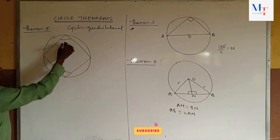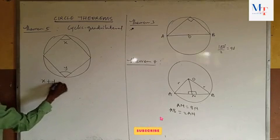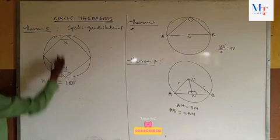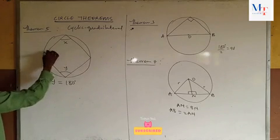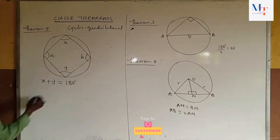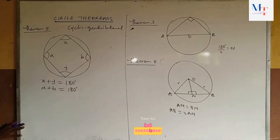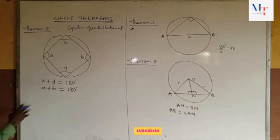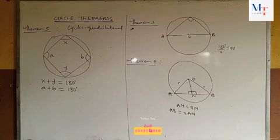If we label one pair of opposite angles x and y, then x plus y equals 180 degrees. Similarly, if the other pair of opposite angles is a and b, then a plus b also adds up to 180 degrees. This is theorem 5, which is also an important theorem derived from theorem 1. That is why we must be able to prove theorem 1 very well.